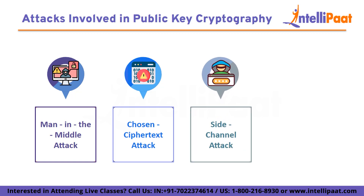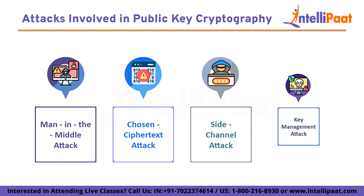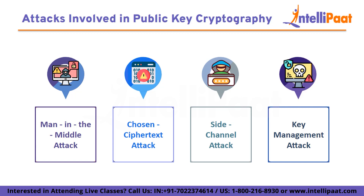Side channel attack: imagine a detector figures out a secret based on how loud a lock sounds when opened. In a side channel attack, attackers gather information from the physical characteristics of the encryption process, such as power consumption, timing, and electromagnetic emissions. These clues help them deduce the private key. Countermeasures include designing cryptographic implementations that do not leak such information. Lastly, key management attack: an attacker targets weaknesses in how keys are generated, stored, and exchanged. If they can obtain the private key, they can decrypt messages and even impersonate you. Proper key storage, distribution, and management practices are crucial to mitigate these attacks.